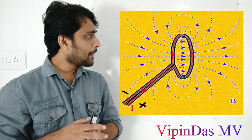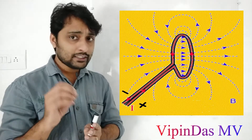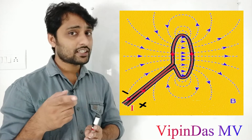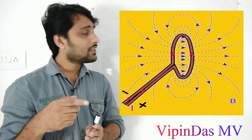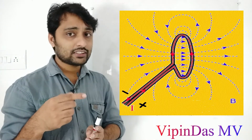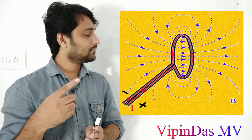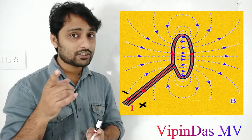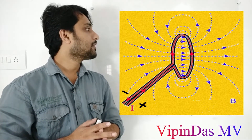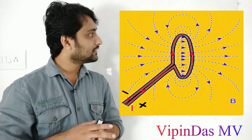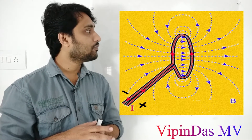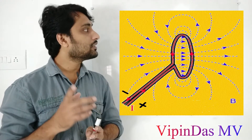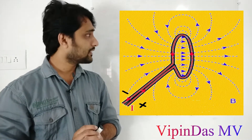At each point, it is forming concentric circles. The magnetic lines of force are formed like concentric circles at each and every point of the circular loop.